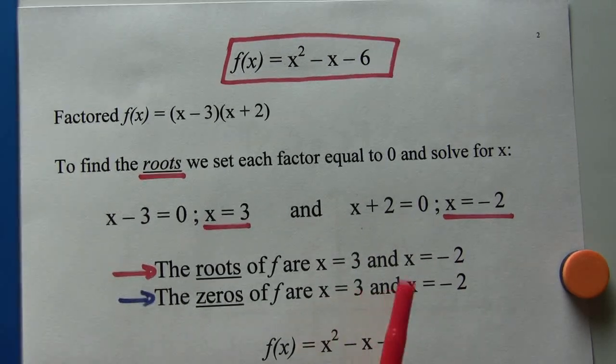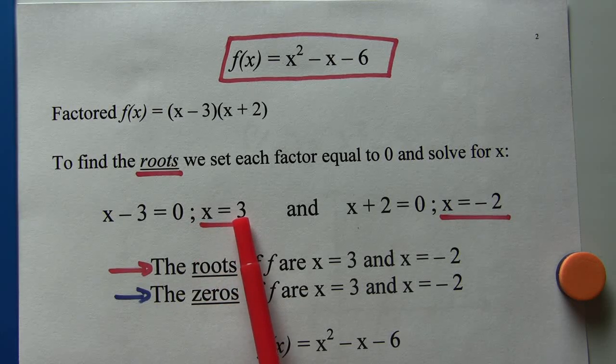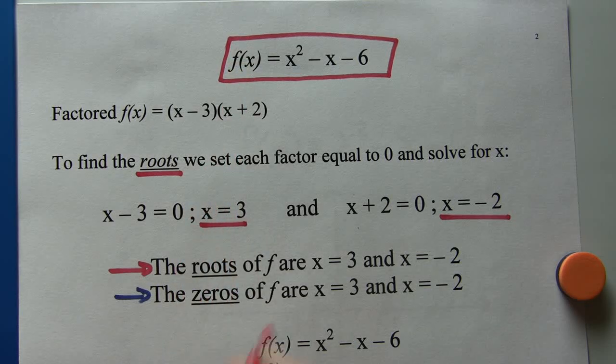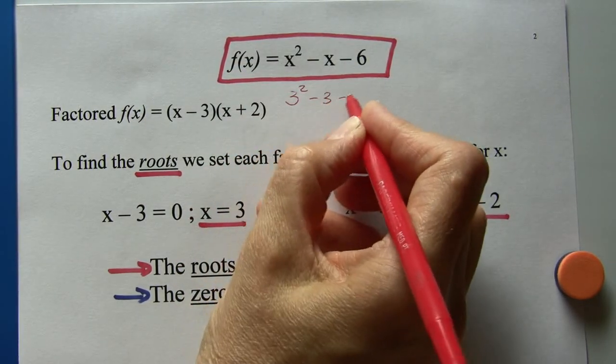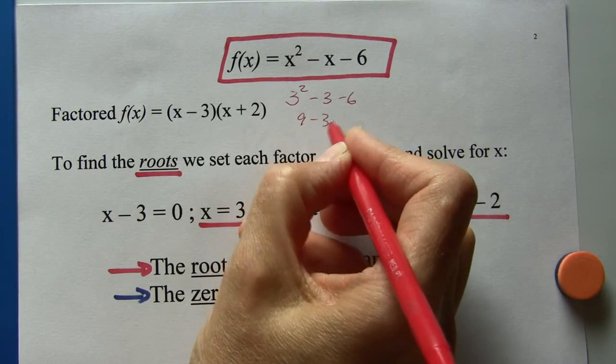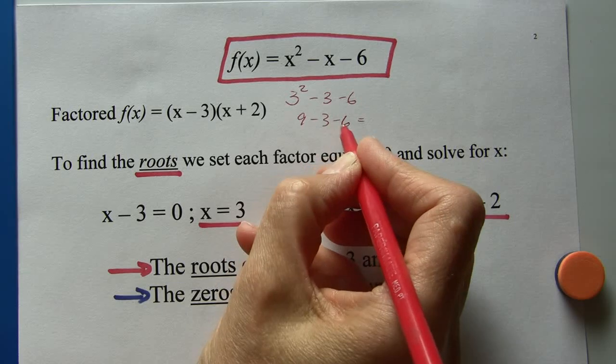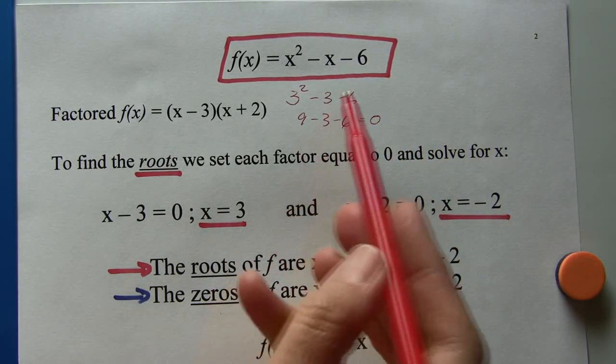Another way to look at this would be to say, let's take this value of 3 and plug it in for x, and we would get 3 squared minus 3 minus 6. Well, that's 9 minus 3 minus 6, which is 0. Hence, it's a 0 of the function. It's also a root of the function.